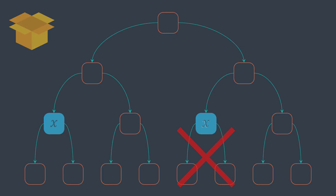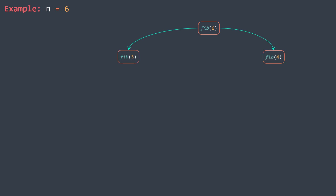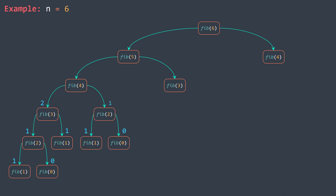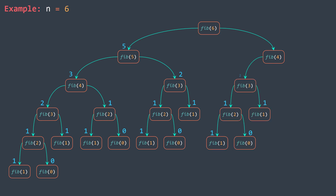How can we apply this to Fibonacci? We're calculating fib(n) by calculating fib(n-1) and fib(n-2), breaking the problem into smaller subproblems. The initial problem was to calculate fib(n), and the smaller subproblems are fib(n-1) and fib(n-2). To calculate fib(n-1), we further break it into fib(n-2) and fib(n-3), and this continues until we reach the smallest possible subproblems: fib(0) and fib(1), whose values we know.